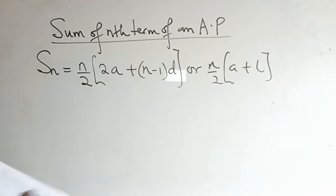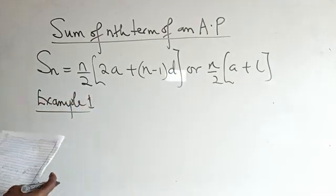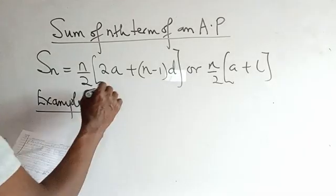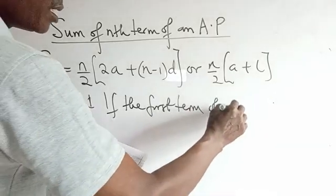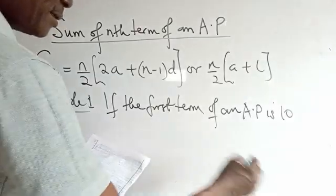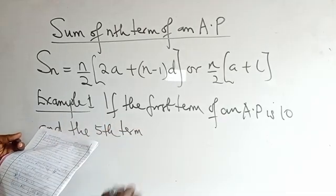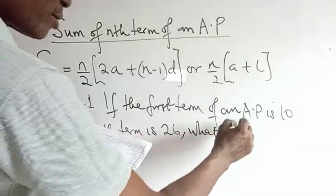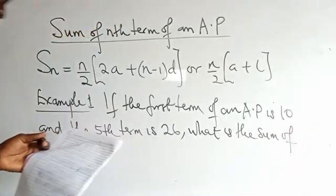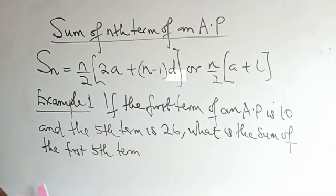Let's quickly solve one or two examples to wrap it up. Example one: if the first term of an AP is 10 and the fifth term is 26, what is the sum of the first five terms?